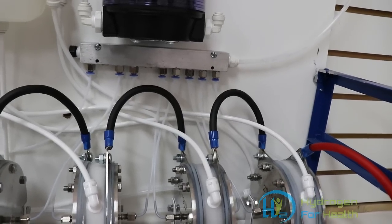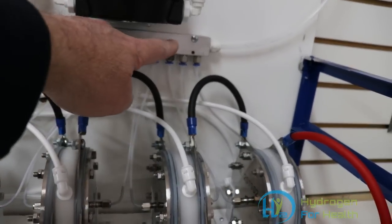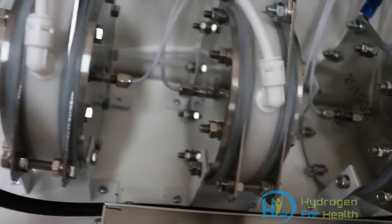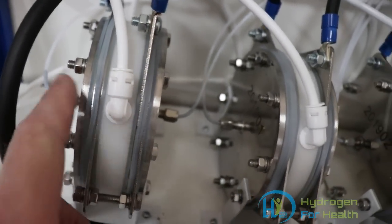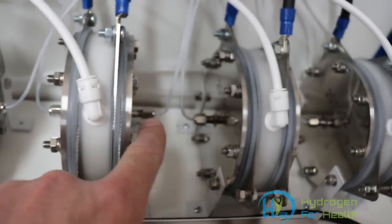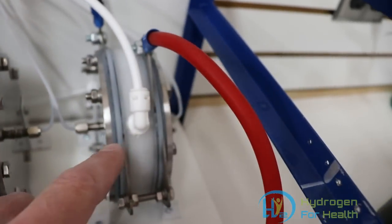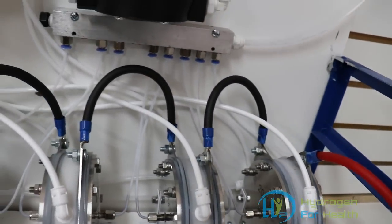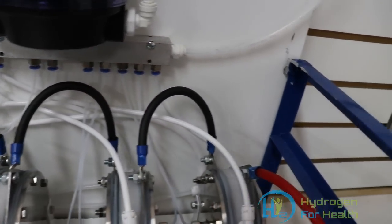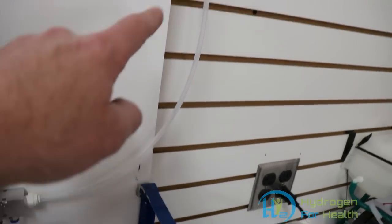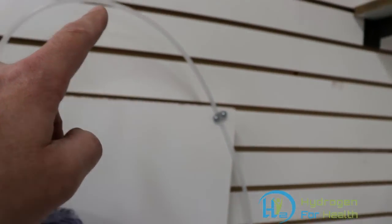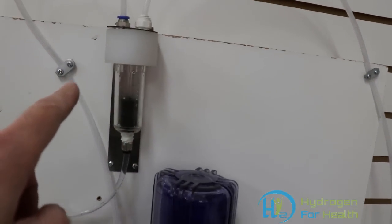Down here, we have our hydrogen manifold on the sides of the generators here. This is our hydrogen outputs all the way across. Those are going up into our manifold and then out the manifold here, up through this tube into our water gas separator.